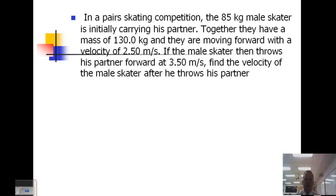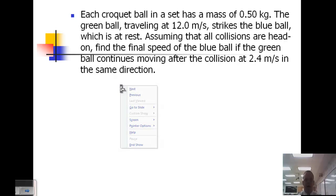In this next problem, we're looking at a pair skating competition. An 85 kilogram male skater is initially carrying his partner. Together, they have a mass of 130 kilograms. They are moving forward with a velocity of 2.5 meters per second. If the male skater then throws his partner forward at 3.5 meters per second, find the velocity of the male skater after he throws his partner. So we have two objects that are stuck together separating into one object.